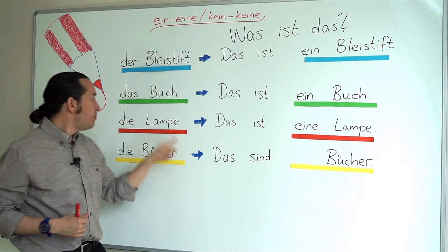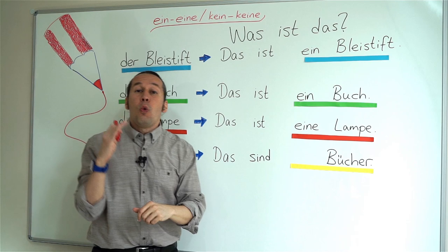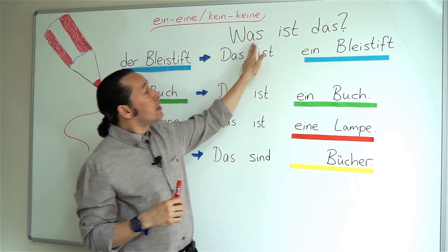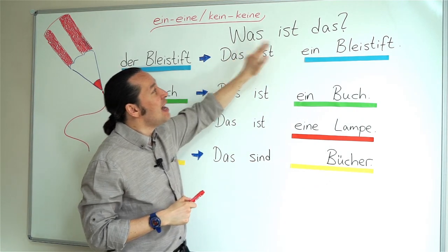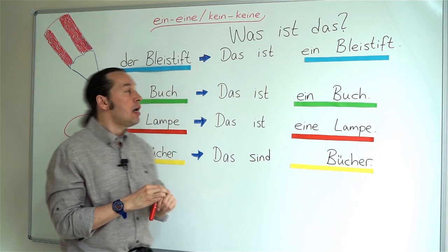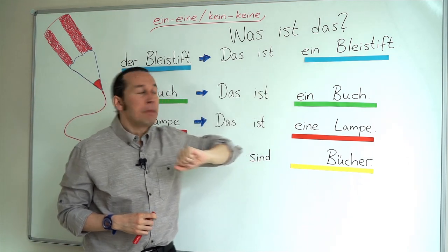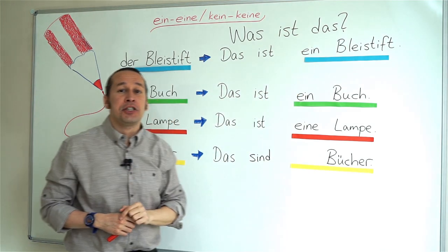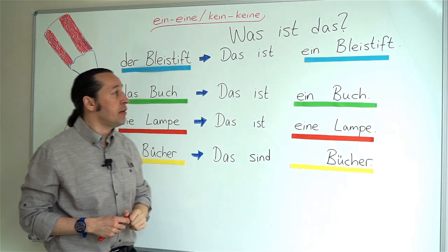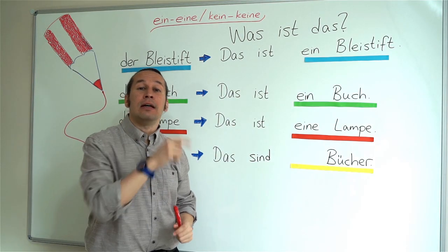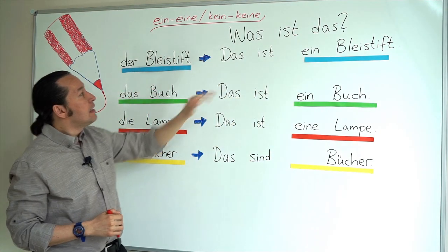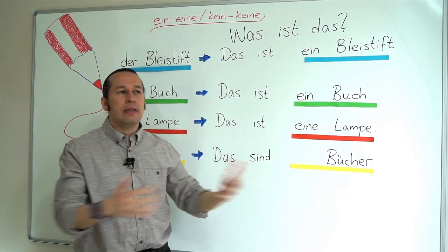So when I ask 'what is this?' — in German, was ist das? — and the answer is 'this is a pencil', I say: Das ist ein Bleistift. Here, instead of 'der', I put 'ein'. So: Das ist ein Bleistift — this is a pencil. If I mention a specific pencil, I would put the article 'der': Das ist der Bleistift — this is the pencil. But for 'a pencil', I say: Das ist ein Bleistift.